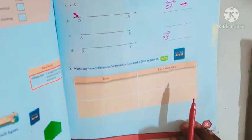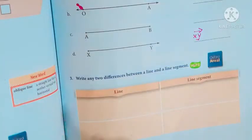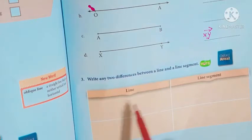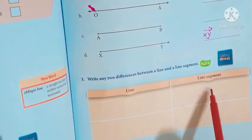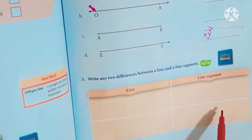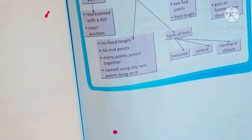Now write any two differences between line and line segment. First: a line has no end points, whereas a line segment has two end points. Second: a line has no fixed length, whereas a line segment has a definite length. That's all — we have completed the whole thing.